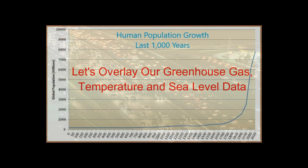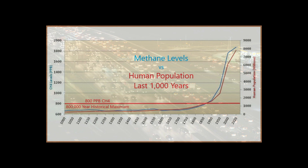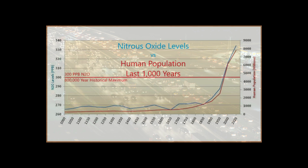Let's overlay our greenhouse gas, temperature, and sea level data on the population graph. Carbon dioxide versus human population: 300 parts per million was the max — around 1911, we crossed the threshold for the carbon dioxide maximum. Methane levels versus human population: 800 parts per billion was the max — around 1870, we crossed the threshold for methane level maximums. Nitrous oxide levels: 300 parts per billion was the maximum — around 1979, we surpassed that limit.